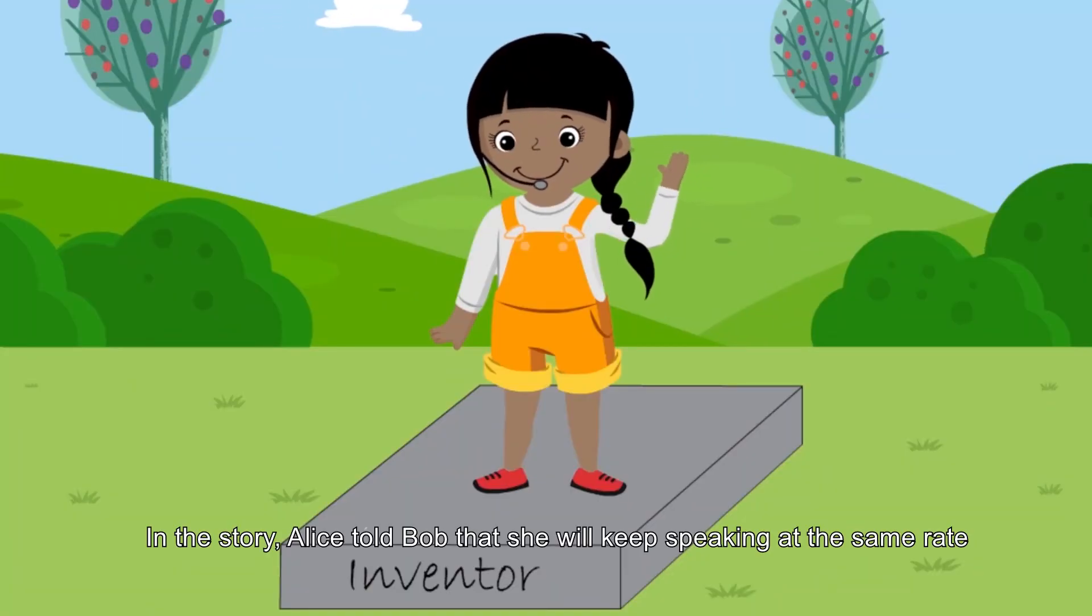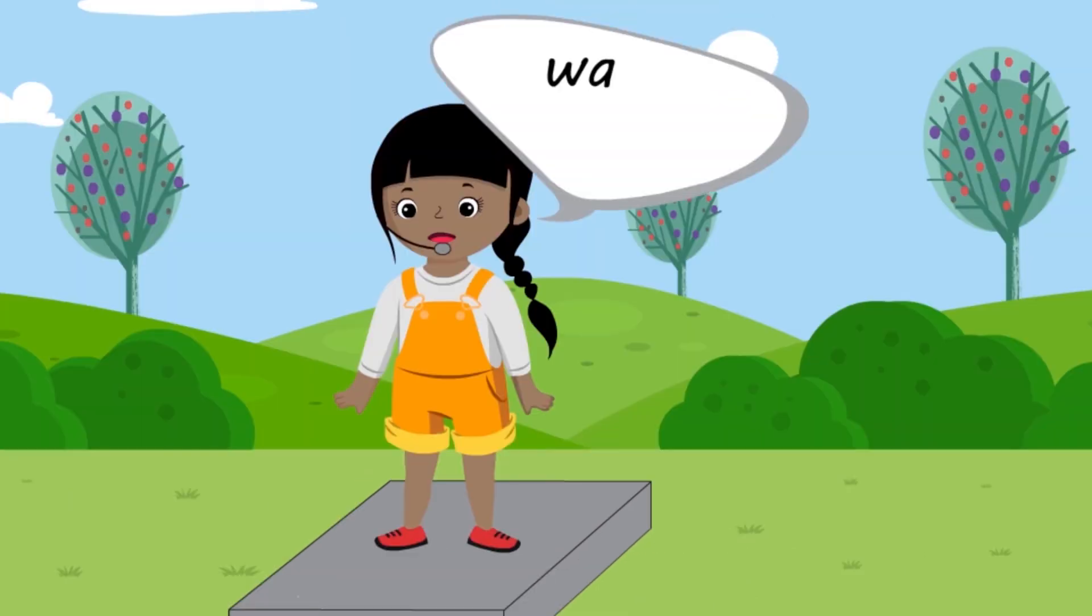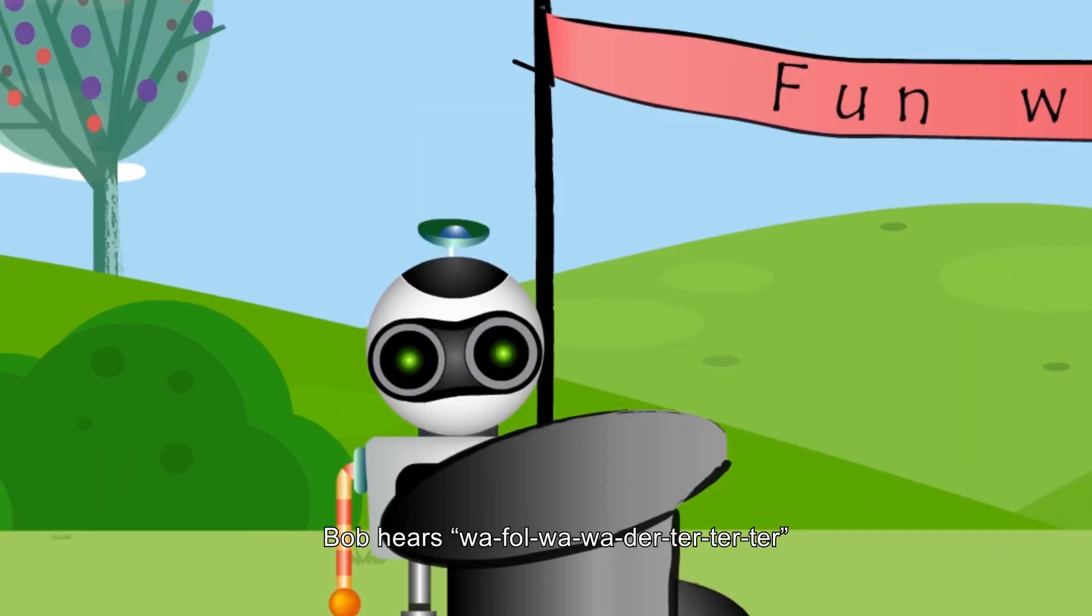In the story, Alice told Bob that she will keep speaking at the same rate, but will repeat the syllable for 4 times. Bob hears...